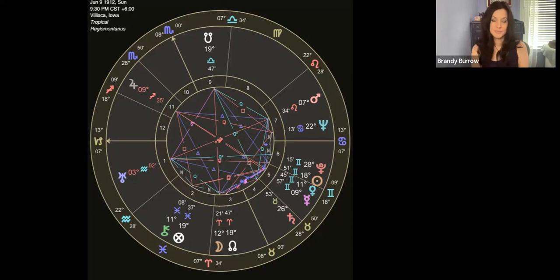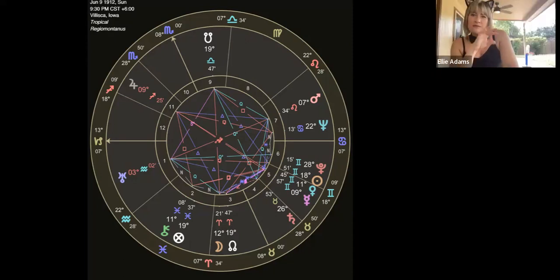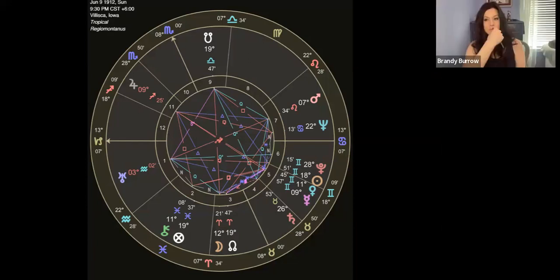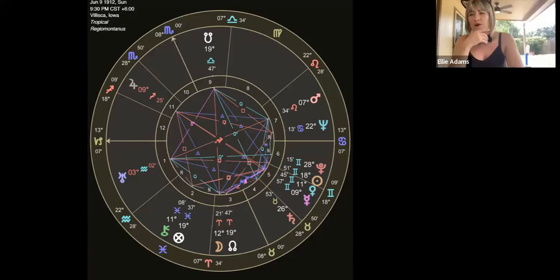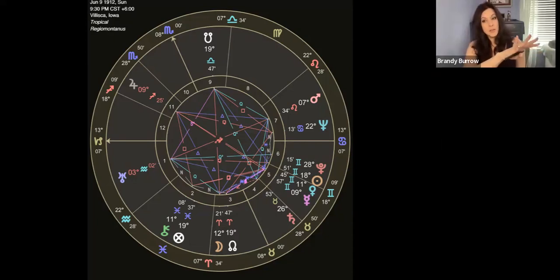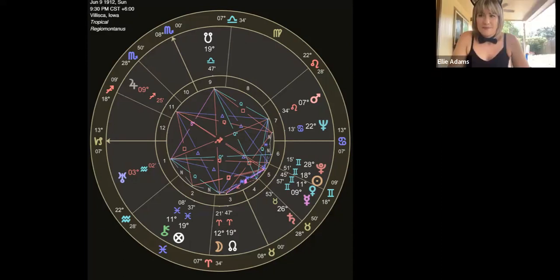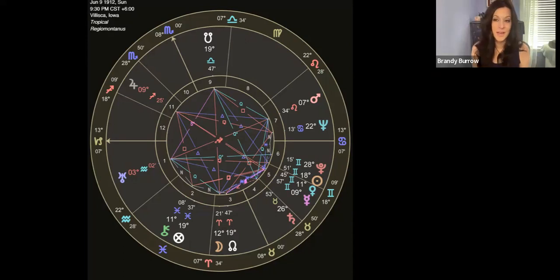Now what's interesting is you've got that Neptune sitting right in the seventh house. There is a theory that whoever did this was lying in wait in the attic when they were gone. Now I know usually with home invasion stuff you might see the ruler of the seventh in the second. I can see this though, because Neptune is also kind of hidden, it's a modern ruler of a 12th house, things that are hidden from you.